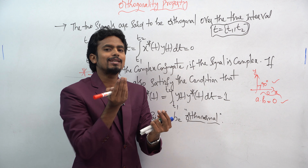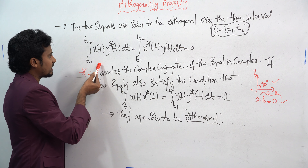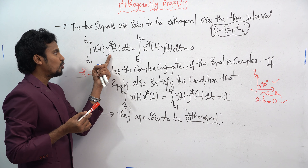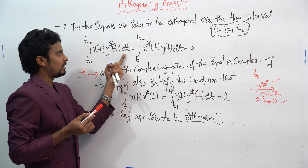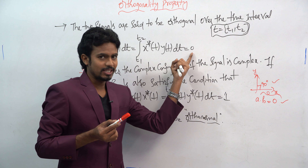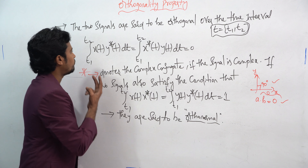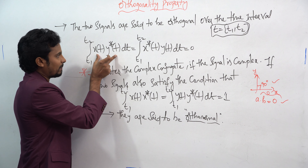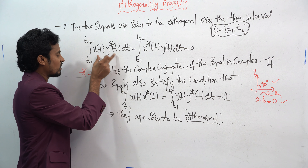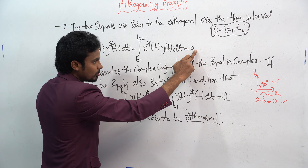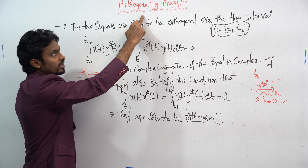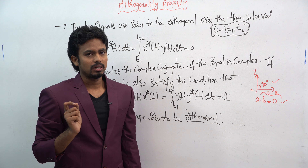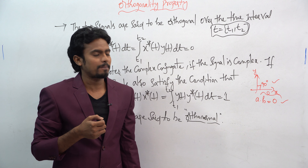In this class, we will see what happens when you take complex conjugates and how it affects the orthogonality property. For example, if we take the interval t1 to t2, and if two signals are said to be orthogonal — meaning 90 degrees apart — then over the time interval t1 to t2, the integration of x(t) into y-conjugate of t, dt, must be equal to 0.